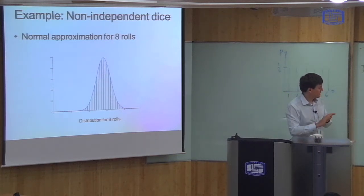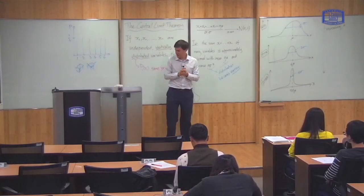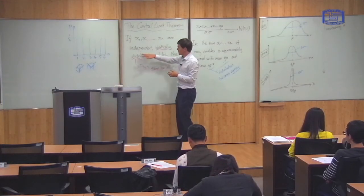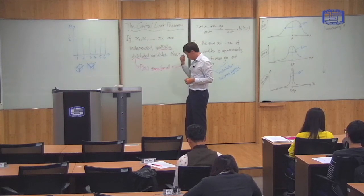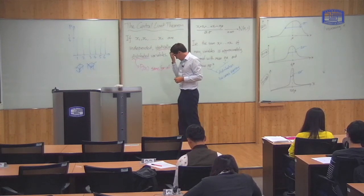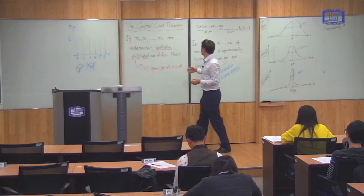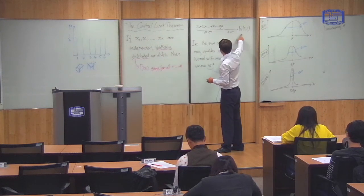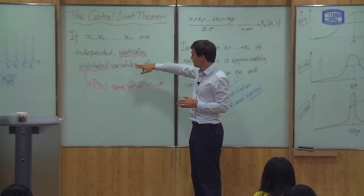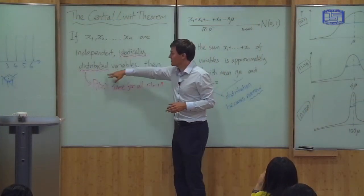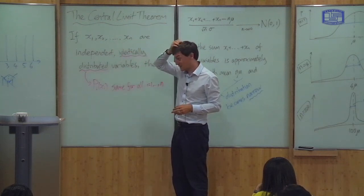The classical statement of the central limit theorem only applies to variables which are independent and identically distributed. But in most cases the central limit theorem is true — you get a narrow normal distribution — even if these conditions are not strictly met. We can relax these conditions to some extent.